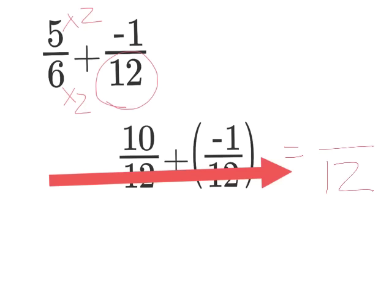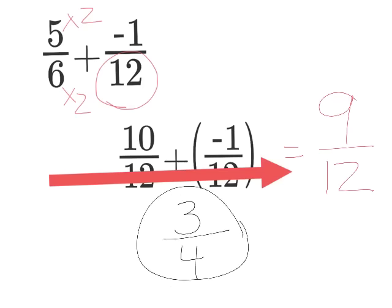So 10 and negative 1 is 9. And it's a positive 9 because 10 is bigger than negative 1. My final step here is to see that 9 twelfths have a common factor of 3. So this simplifies to 3 fourths. Now for some people this will be the hardest part of the problem because sometimes we don't realize which numbers have common factors. But when you see it and you realize it, try to simplify it.